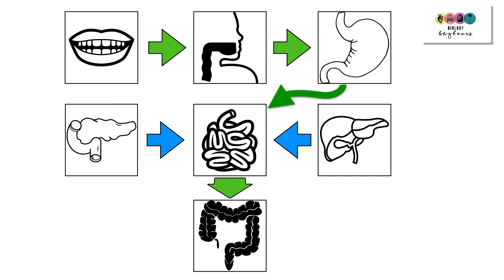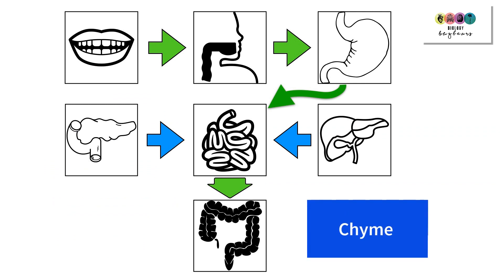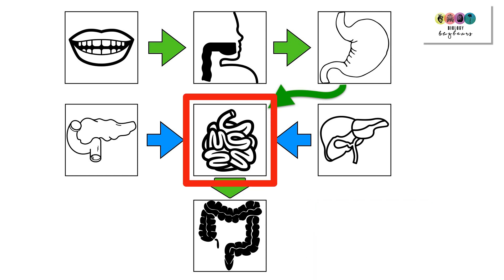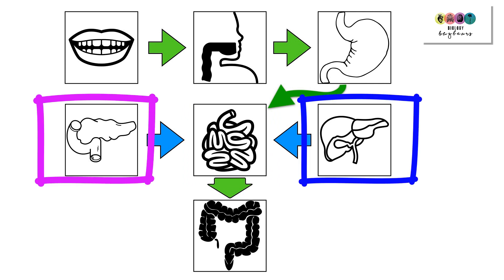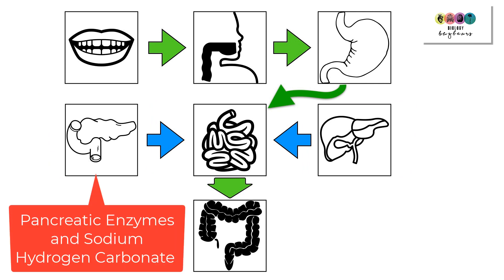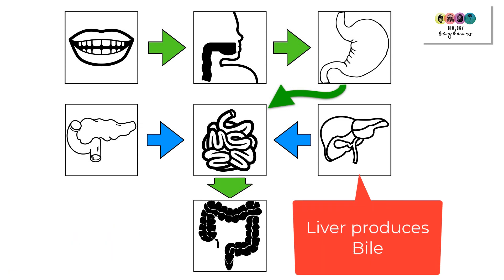After several hours, the liquid substance leaves the stomach as chyme. This highly acidic chyme enters the small intestine, where secretions from the pancreas and the liver act on it. The pancreas produces pancreatic enzymes and sodium hydrogen carbonate, which neutralizes the chyme. The liver produces bile, which is sent to the gallbladder and eventually makes its way to the small intestine.